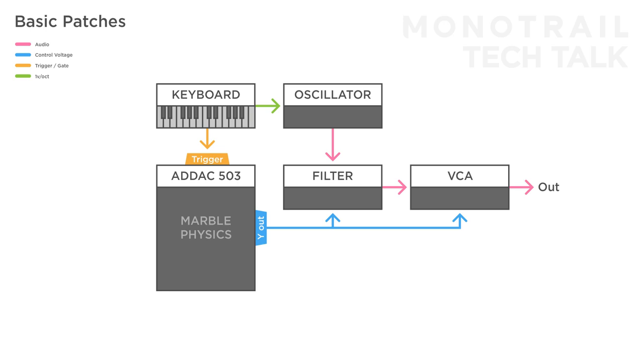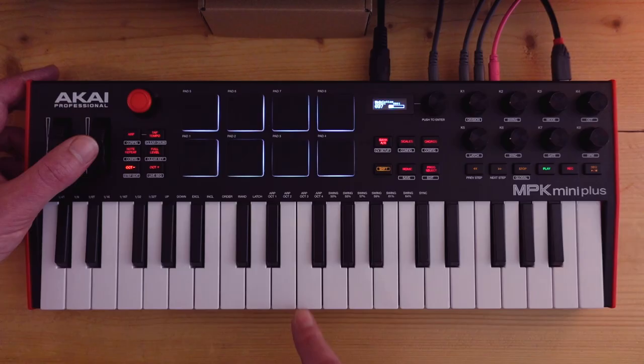You can expand on this patch and make it more dynamic in lots of ways — for example by sending the control voltage from the mod wheel to the elasticity as well as the speed.